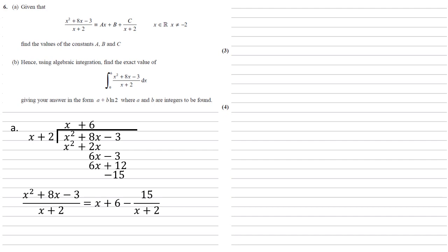So we get the x squared plus 8x minus 3 all over x plus 2 is equal to the x plus 6 from the top of our division, minus our remainder of 15 over our divisor x plus 2. So comparing this to what we need, we can see that a is equal to 1, b is equal to 6, and c is equal to negative 15.